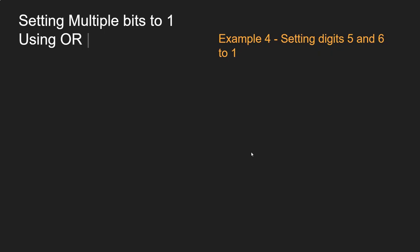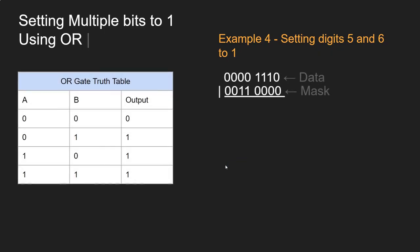Setting multiple bits to 1 is just as easy. Instead of a mask with only one digit set to 1, you set multiple digits to 1 — for instance, digits 5 and 6. Then you run it through the OR gate and you get exactly what you need. Because it's an OR, if a bit was already off it stays off, but where the mask has a 1 it flips the bit on. That's setting multiple bits.